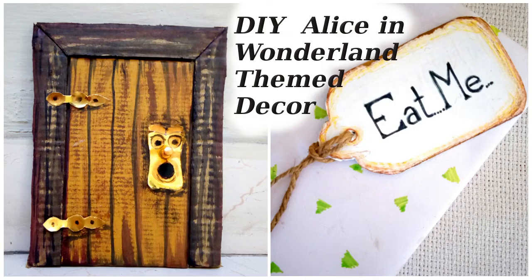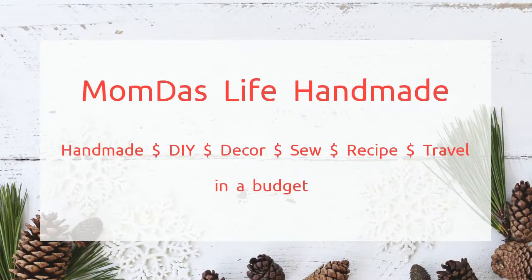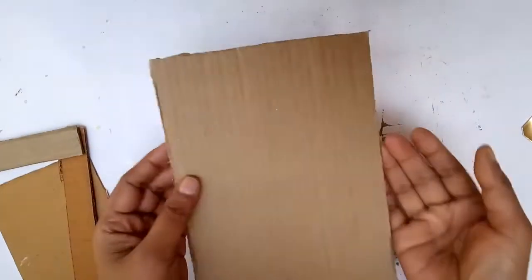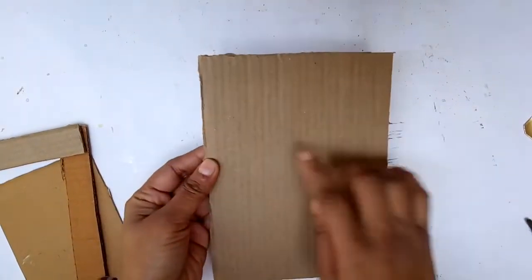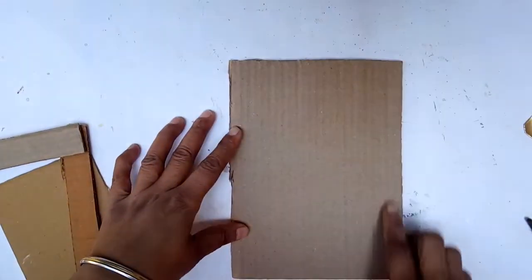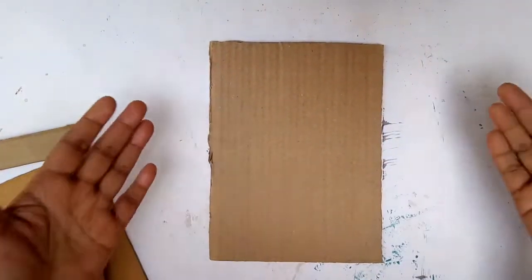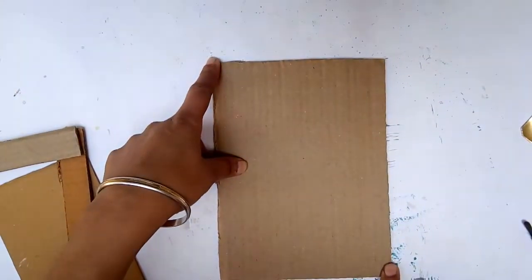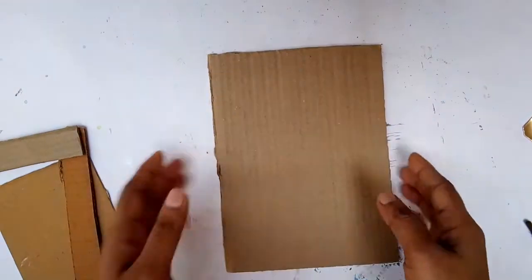Time for some fun crafts. I'm going to DIY Alice in Wonderland themed decor. We're going to make the doorknob with the door and eat me sign. For making the door from Alice in Wonderland, I've taken a rectangular piece of cardboard, approximately five inches by seven inches or five inches by eight inches.